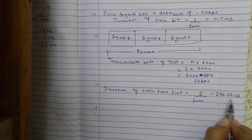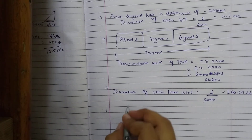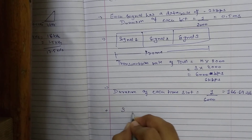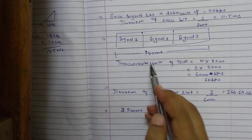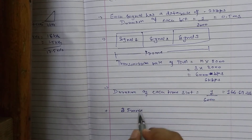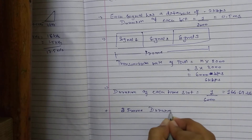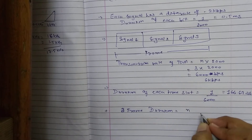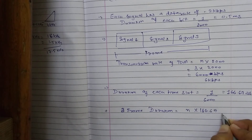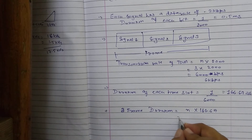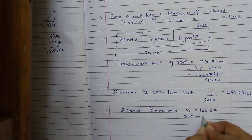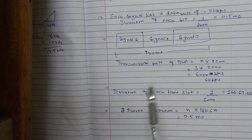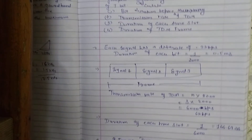The fourth thing asked is the frame duration. If each time slot takes 166.67 microseconds and we have three time slots in total, then the frame duration equals the number of time slots multiplied by the time taken by each slot: 3 × 166.67, which equals 0.5 milliseconds.